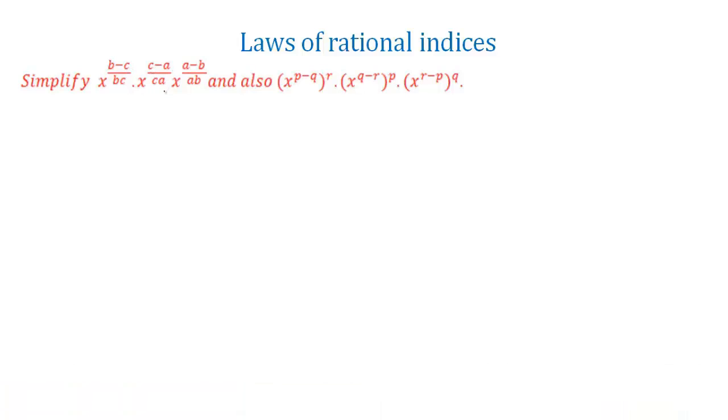Into x power a minus b divided by ab. And also we have to simplify x power p minus q into r into x power q minus r into p into x power r minus p into q.